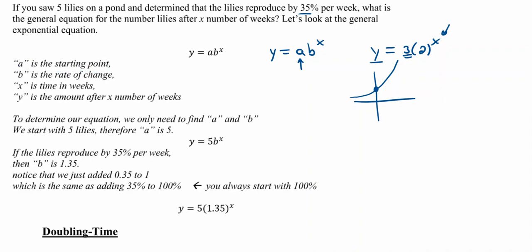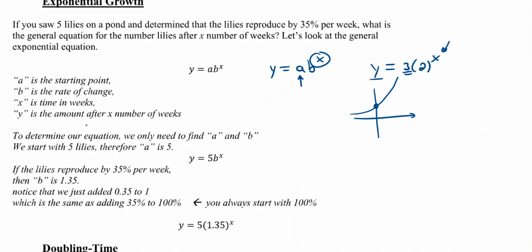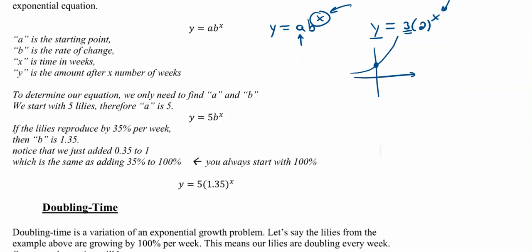Your b value is the rate of change — in this case 35 percent per week. X is the time in weeks, so it could also be written as T. Sometimes you'll see N equals 3 times 2 to the power of T instead of x, but it's the same idea. Your y is the amount you get out — like the number of lilies in this case.